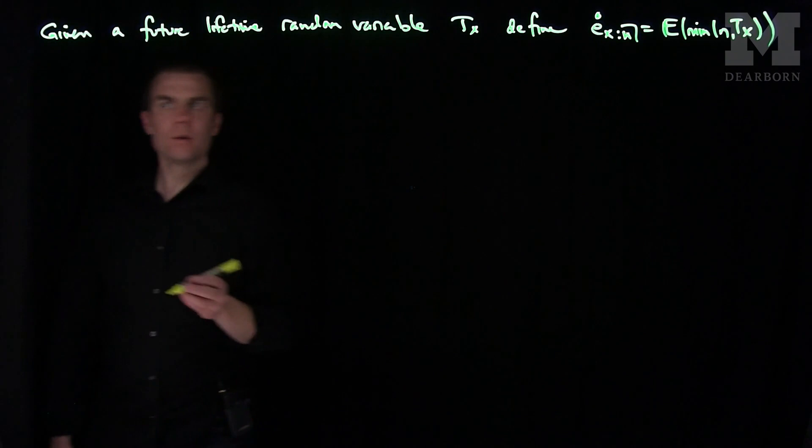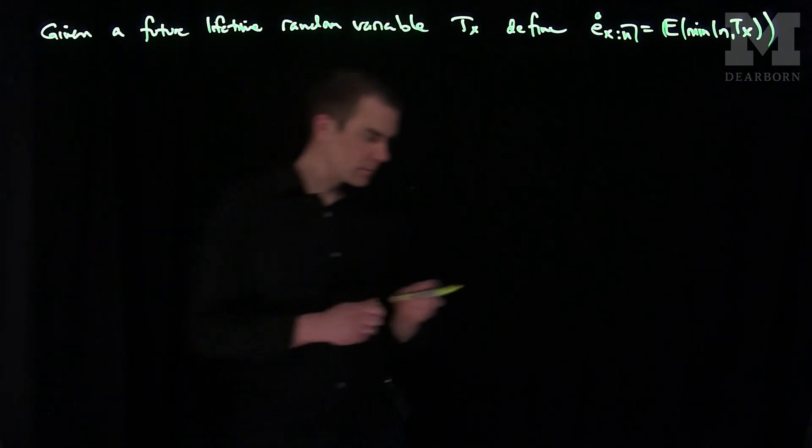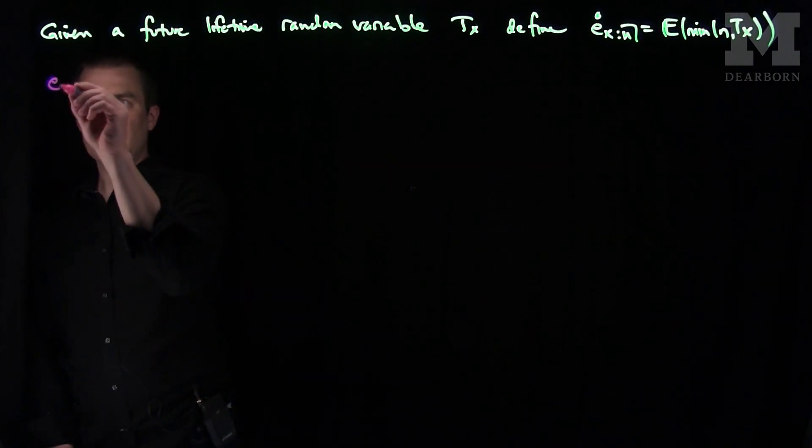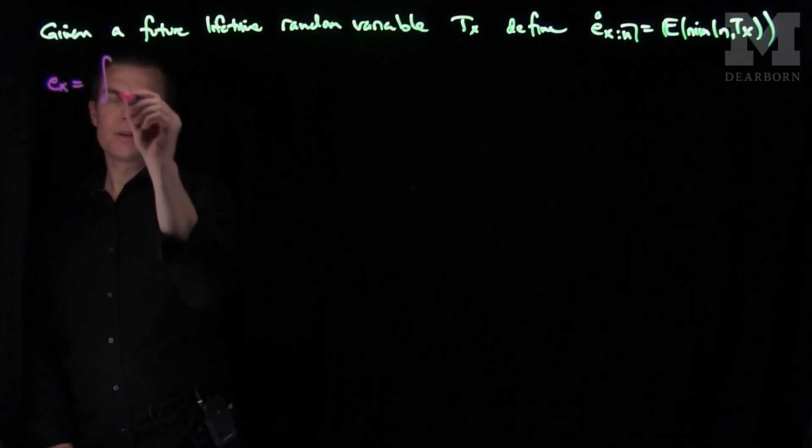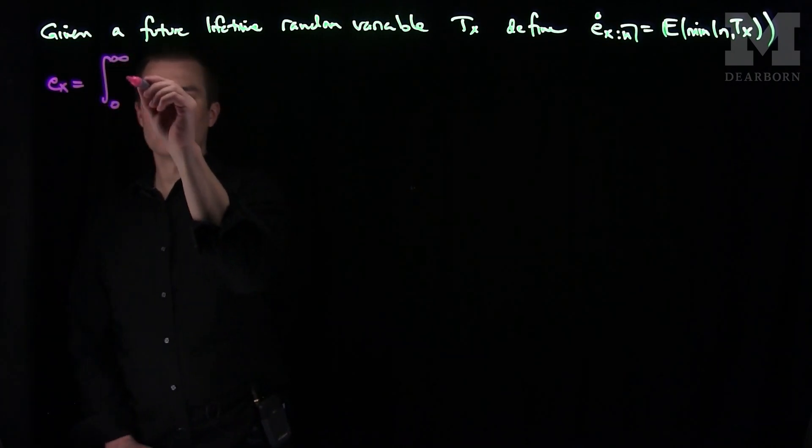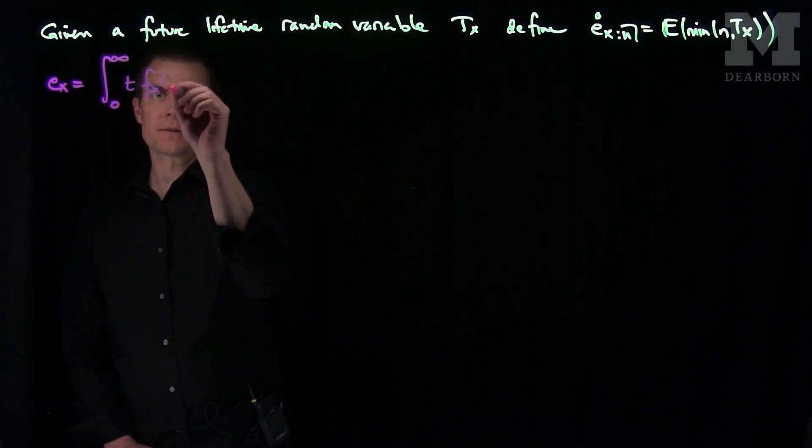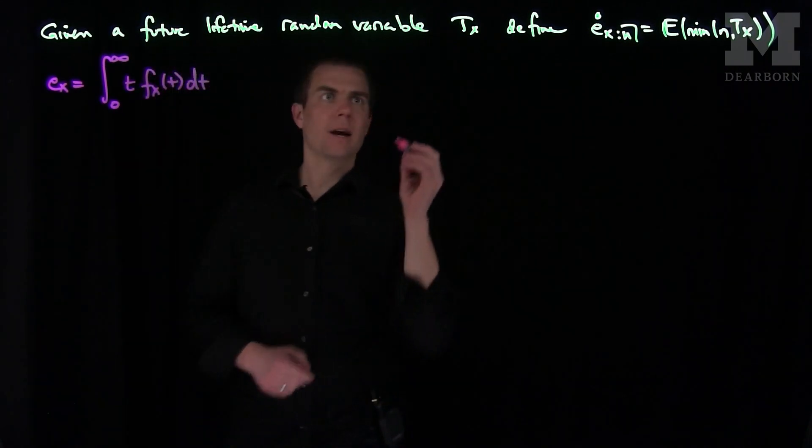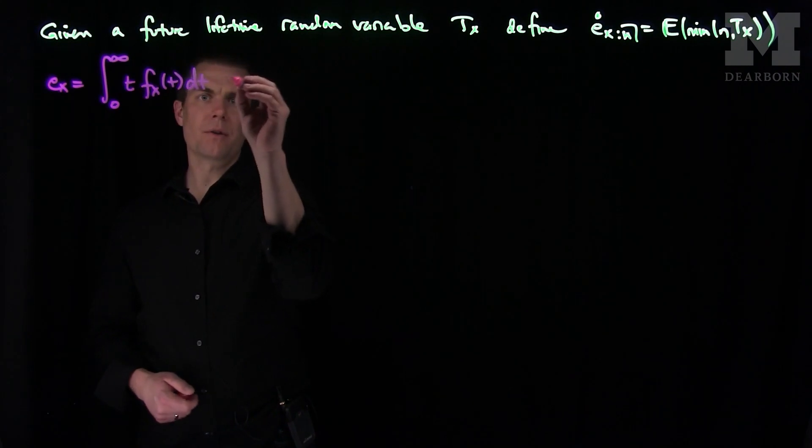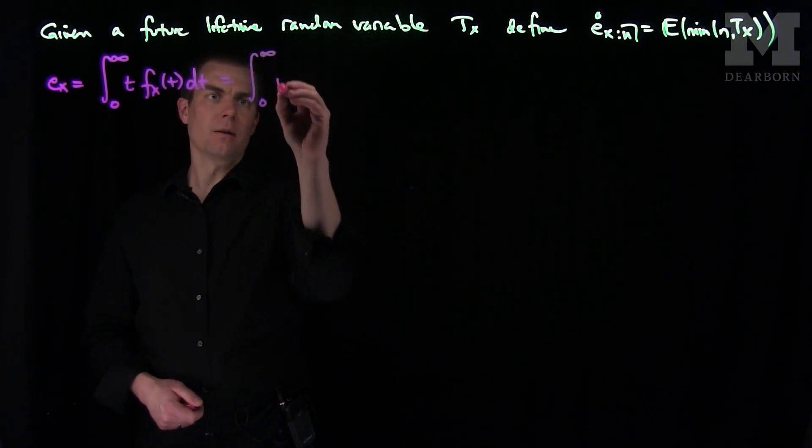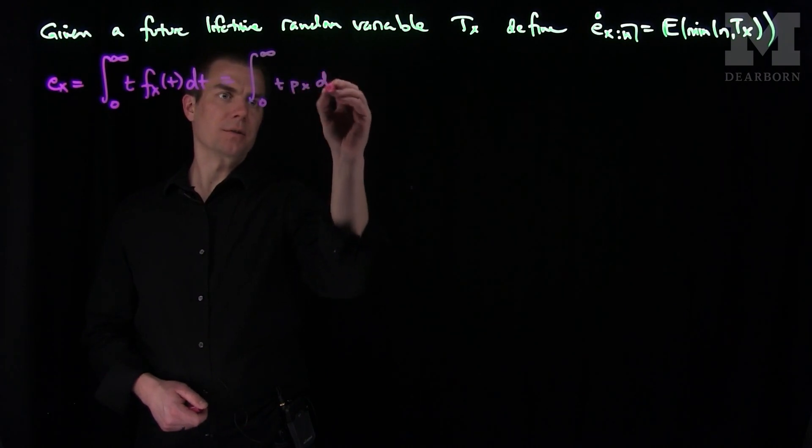And so what we can do now is we'll write down the definition. So e(x) by definition is the integral from 0 to infinity of t f(x,t) dt where f(x,t) is the pdf of Tx. We also know that this is equal to the integral from 0 to infinity of t px dt.